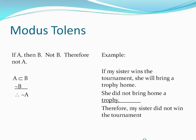Now let's examine the modus tollens: If A, then B. Not B, therefore not A. Represented symbolically on the left, with an example on the right: If my sister wins the tournament, she will bring home a trophy. She did not bring home a trophy. Therefore, my sister did not win the tournament.